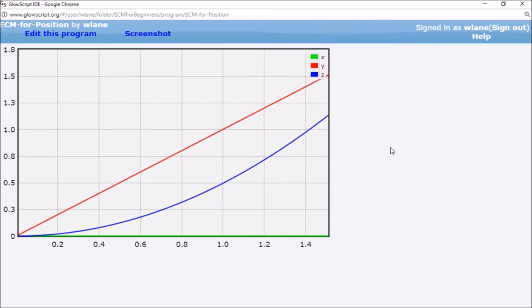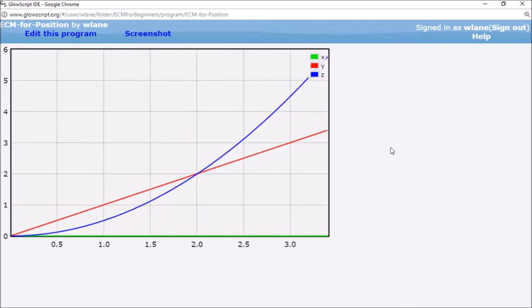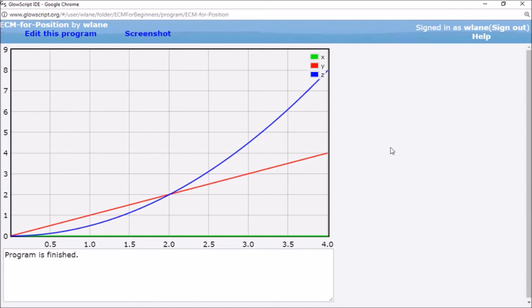The first thing to note is that our x coordinate in green does not change. That's because its velocity component is zero. However, the y coordinate in red makes a line. That's because its velocity component is constant. Finally, the z coordinate in blue makes a parabola, a function with an increasing slope. That's because its velocity component increases linearly with time.